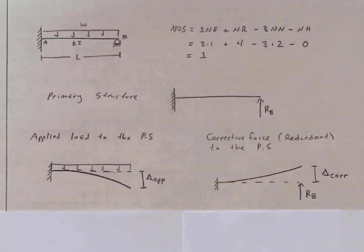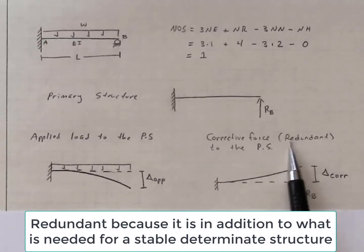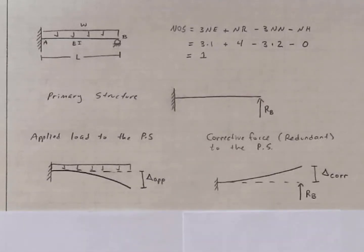And in the second diagram, I'm looking to see what this force R sub B does to the primary structure. I'm calling this force a corrective force. Some people call it a redundant as well. And the reason that it's a corrective force is that over here, the applied load has caused a deflection. This deflection shouldn't be there.